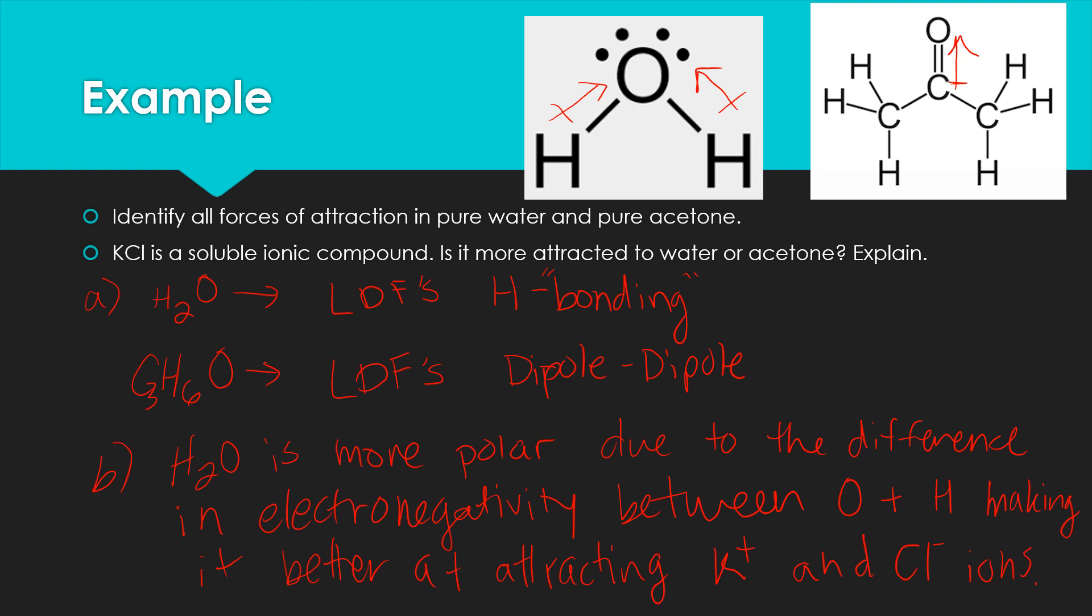So it would be more attracted to water. Water is more polar due to the difference in electronegativity between oxygen and hydrogen, making it better at attracting potassium and chlorine ions. So that's how we can answer that one. So those are just some examples of how we can think about solubility in our substances and answer some multiple choice and free response questions about chemicals mixing with one another. Alright, thanks guys.